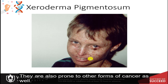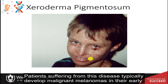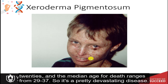Patients suffering from xeroderma pigmentosum are also prone to other forms of cancer. They typically develop malignant melanomas in their early twenties, and the median age for death ranges from 29 to 37. It's a pretty devastating disease.